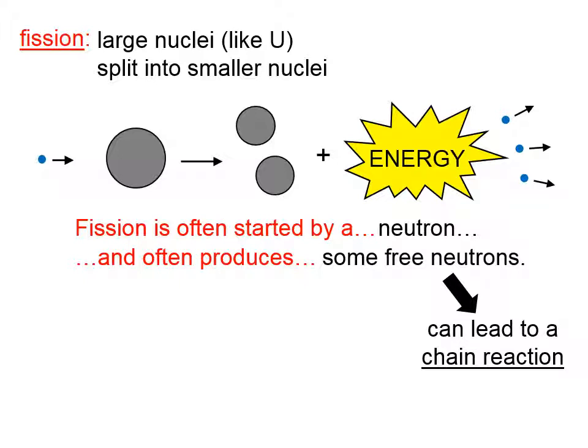So if each of those produces three neutrons, you can see how quickly this could escalate and be potentially dangerous. Here are two examples of fission.